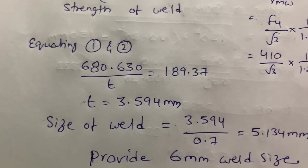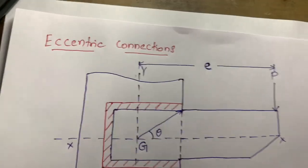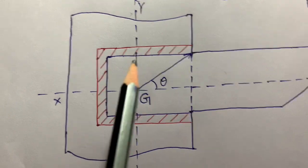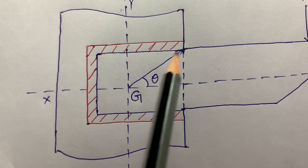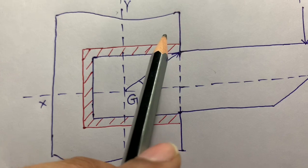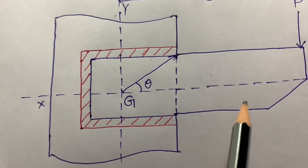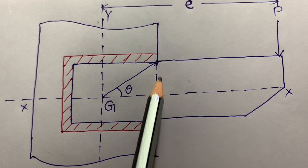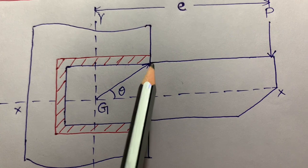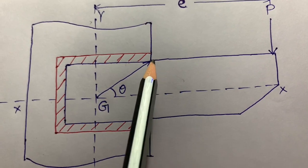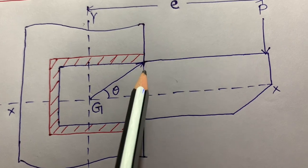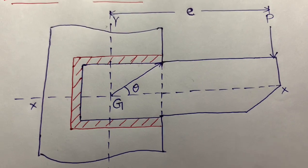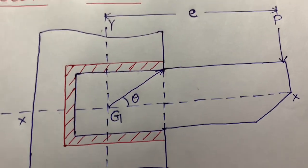This is the eccentric connection problem. In the next class, I am going to solve a similar eccentric problem, but where the bracket plate is connected at the end of the column face — joined to the face using welding — rather than overlapping as in this problem. I hope you all understood. Thank you for watching.